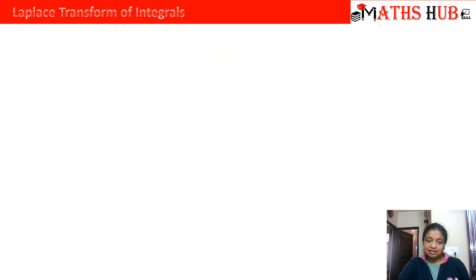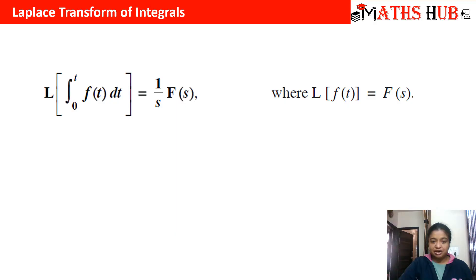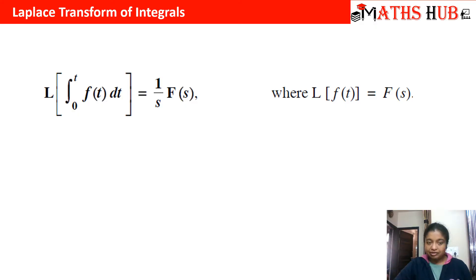To begin with, let us start with the Laplace transform for integral. The Laplace transform of the integral from 0 to t of f(t) dt is (1/s)·F(s). So whenever we are taking an integral from 0 to t on the left side, on the right hand side F(s) is getting divided by s.